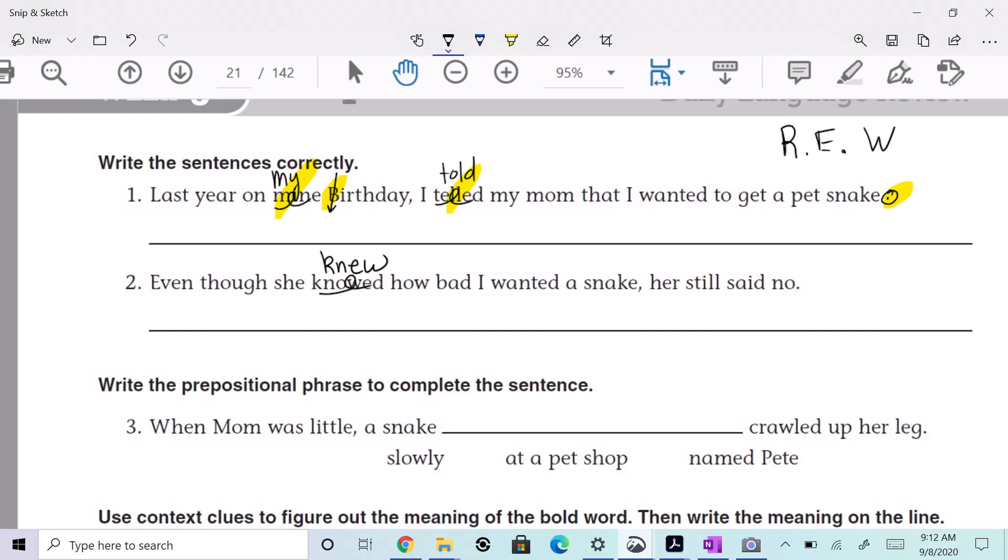How bad I wanted a snake, her still said no. What do you see after the comma? That sounds funny. Even though she knew how bad I wanted a snake, her still said no. Which? She still said no. Get 'she' in there.